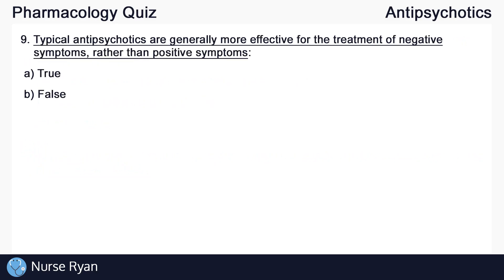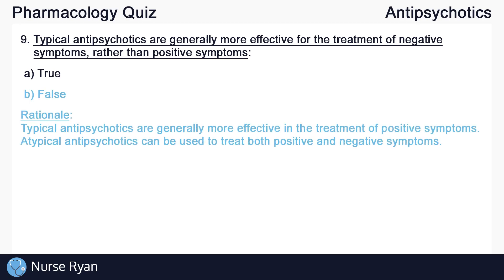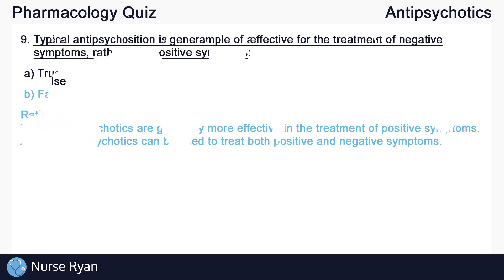Question number nine: typical antipsychotics are generally more effective for the treatment of negative symptoms rather than positive symptoms. This is B, false. Typical antipsychotics are generally more effective in the treatment of positive symptoms, while atypical antipsychotics can be used to treat both positive and negative symptoms.